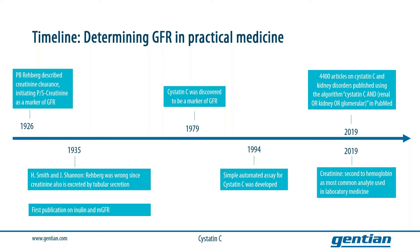Creatinine clearance was first described as a marker for GFR in 1926 by Dr. Reberg. And in 1935, the first paper on measured GFR by injecting inulin and measuring the excreted amount of inulin in the urine was published. At the same time, Dr. Smith and Dr. Shannon published an article where they concluded that there are significant drawbacks in the use of creatinine, as tubular secretion of creatinine reduces the accuracy of eGFR based on creatinine to determine kidney function.